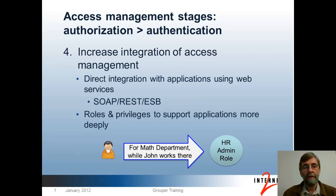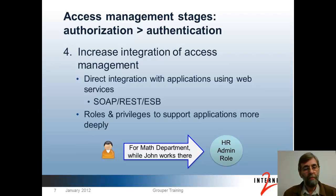Finally, the fourth stage goes much deeper and more capable — adding not just groups but richer structures like roles and permissions, and allowing more direct application integration with the access management system over web services or an enterprise service bus. Roles and privileges are used to model more fine-grained authorization. For example, Joe has an HR admin role for the math department so long as Joe works there — a more sophisticated access policy embodied in the centralized system.